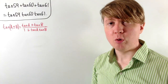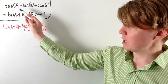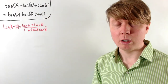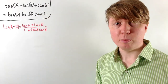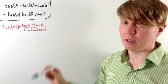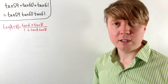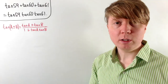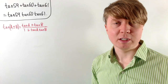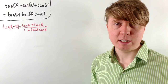We're going to explore the fact that, working in degrees, tan59 + tan60 + tan61 is equal to the product tan59 × tan60 × tan61. First we'll verify that this is true, and then we'll look at how we can generalise this and see it as a specific example of a more general trig identity with tan.